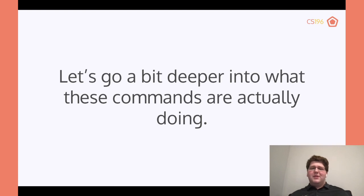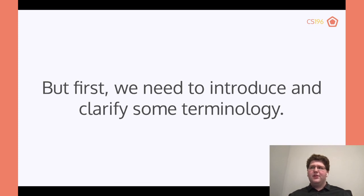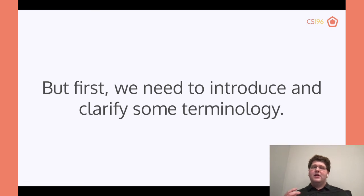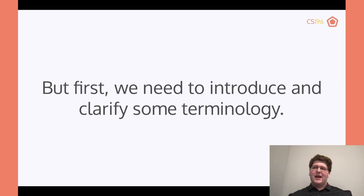Let's go a little bit deeper into what these commands are actually doing on a lower level. First, some terminology. A commit is when you type the commit command — it takes a snapshot, like a picture, of everything you changed since the last commit was made. You can see a version of your code, and once you've committed you can go back and revert to it or see the changes that were made in that commit.